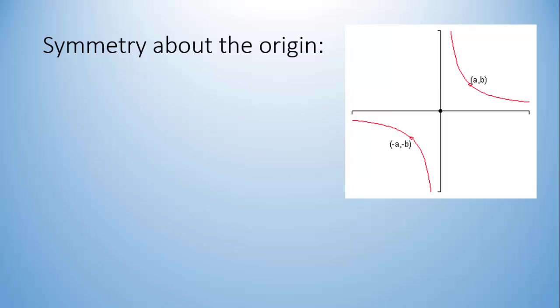So if we rotate this around the origin, and the graph lines up on itself before we go 360 degrees around, then this has symmetry about the origin.